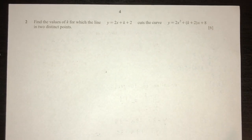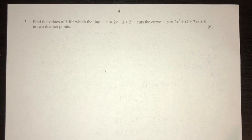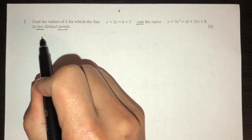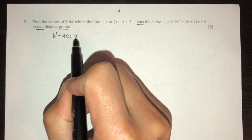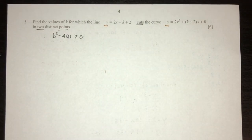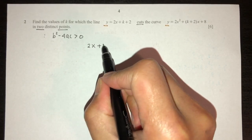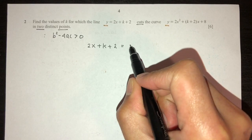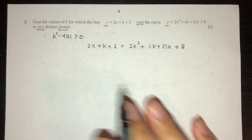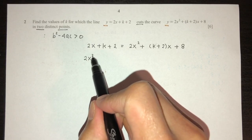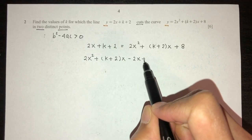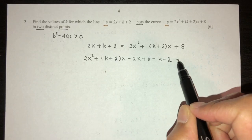Let's move on to question number two. We have to find the values of k for which the line cuts the curve at two distinct points. Whenever you see that, you use b² − 4ac > 0. First, solve simultaneously — replacing y in both equations gives 2x + k + 2 = 2x² + 2x + 8. Sending everything to one side: 2x² + kx + 6 − k = 0.